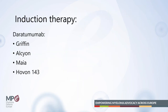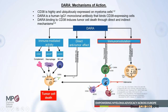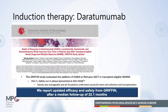Starting with induction therapy — there are two very promising agents that have already proven themselves in second- and third-line settings but are now becoming increasingly popular in first-line treatment. The first is daratumumab, a monoclonal antibody. I'll talk about four trials showing its effectiveness in first-line therapy. Daratumumab works either through the immune system or directly — it binds to the CD38 moiety on myeloma cells, causing their death, and also modulates the immune system.